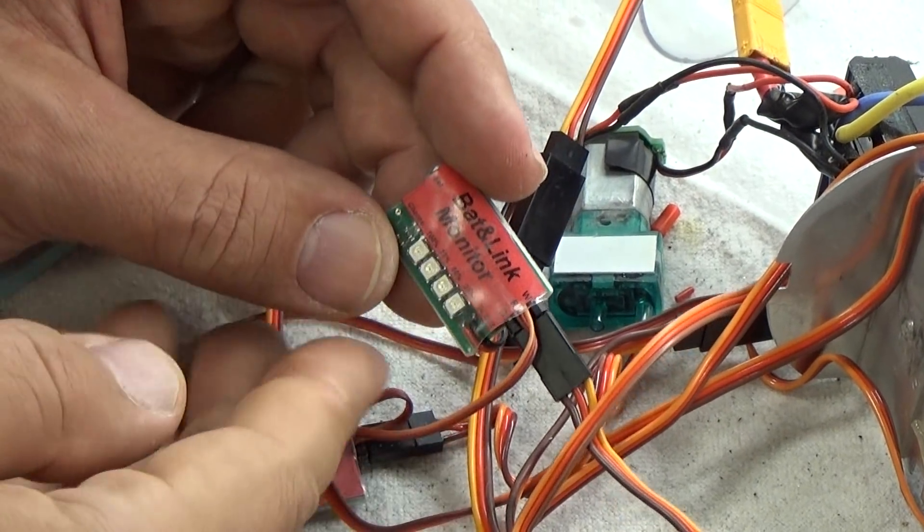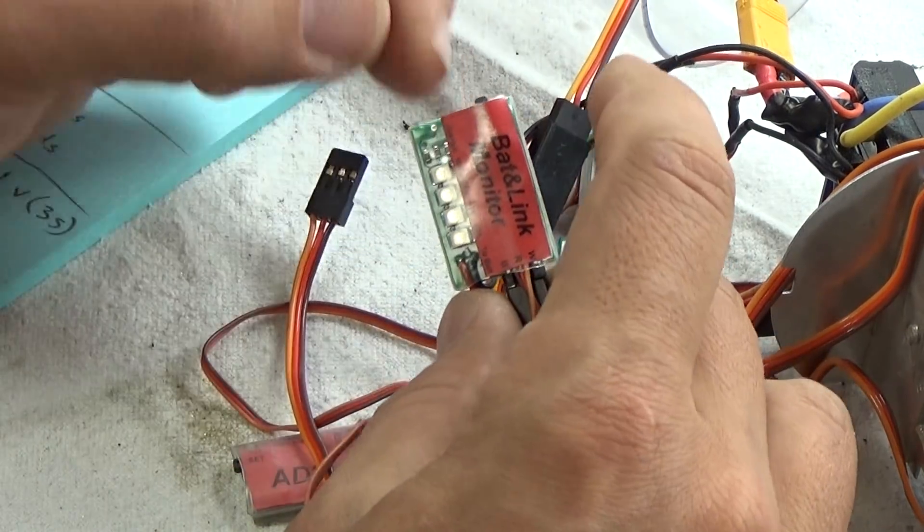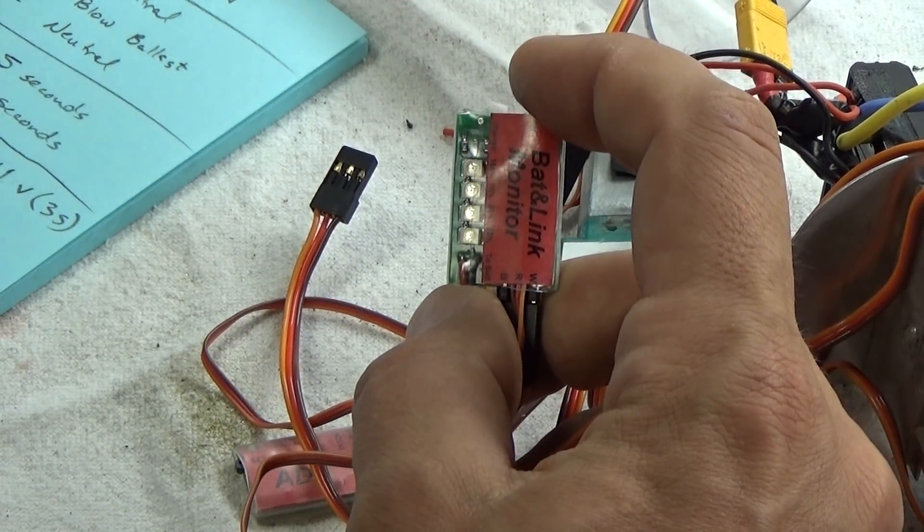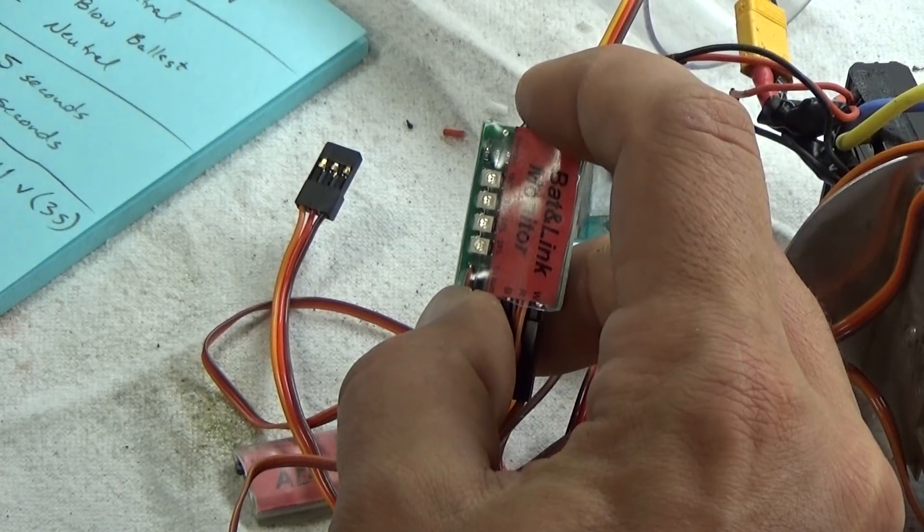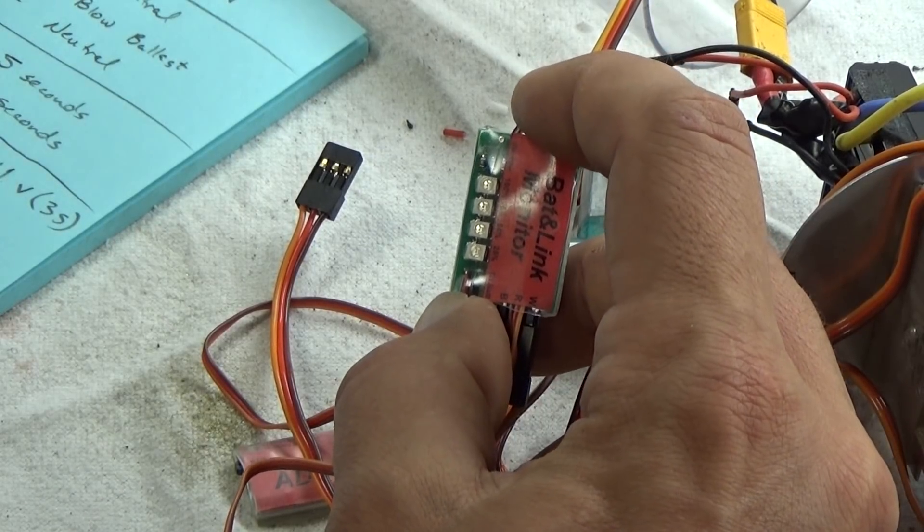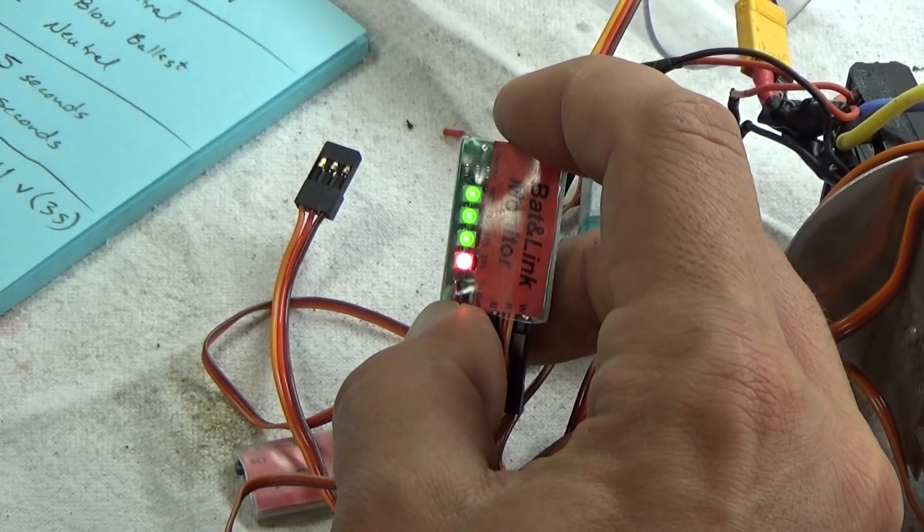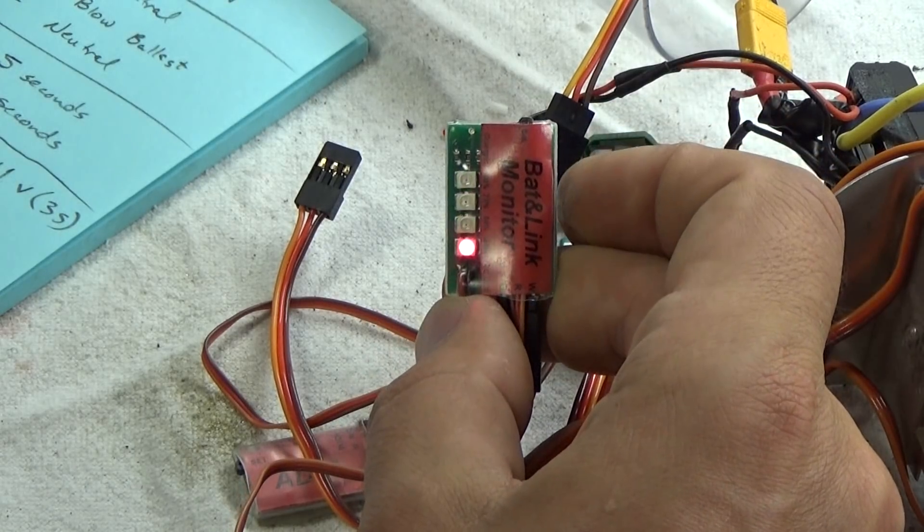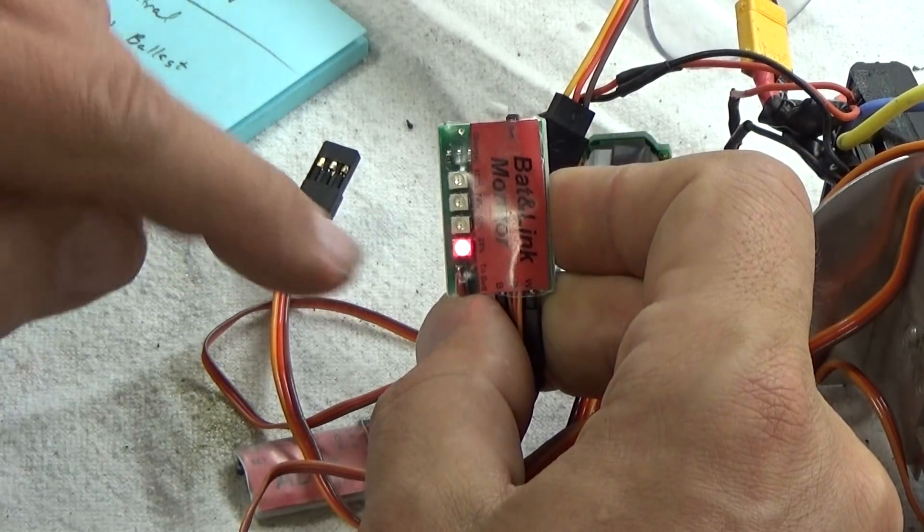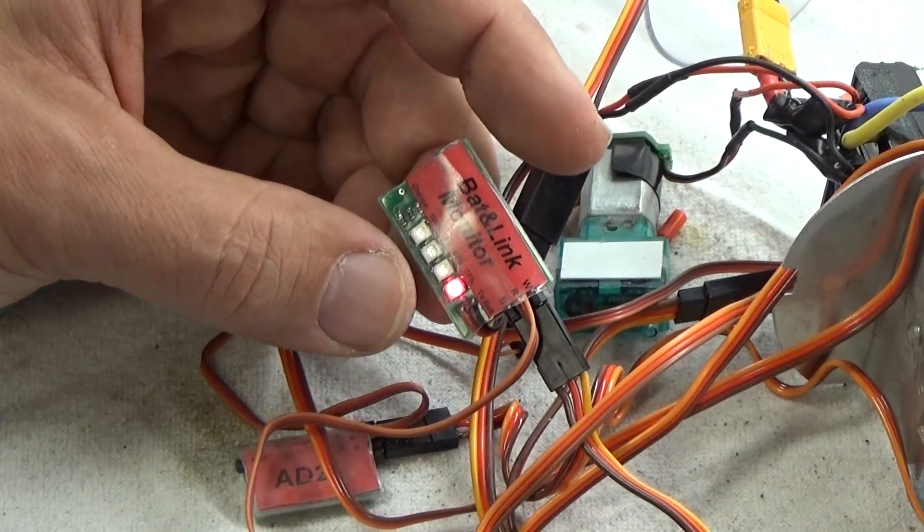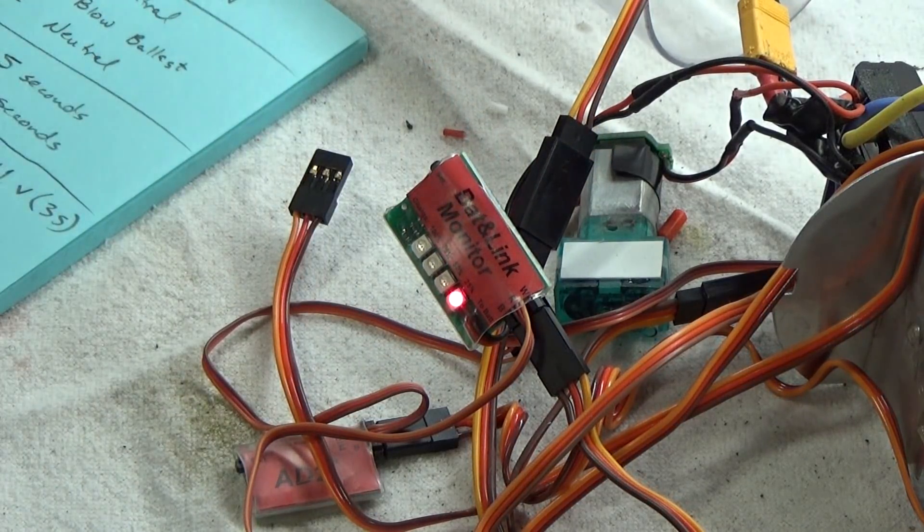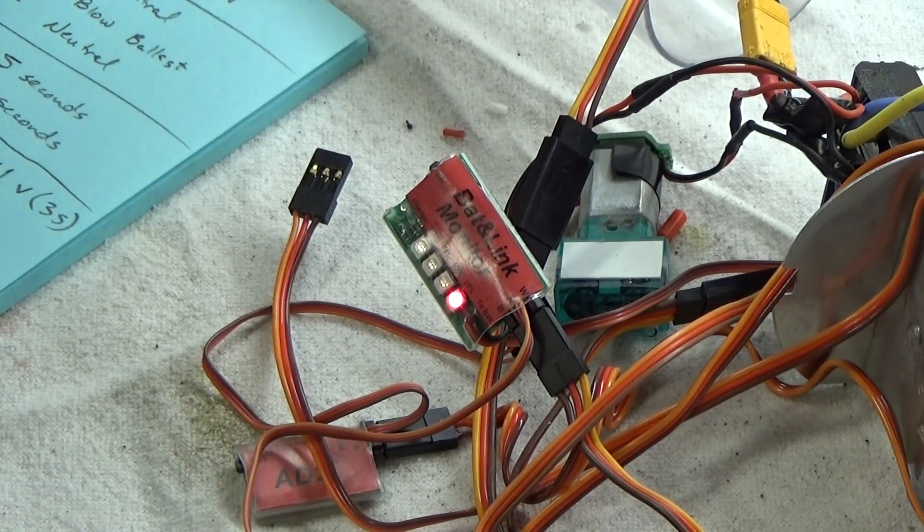All right, let's get started. I've walked you through what the connections look like. Now we're going to enter setup mode. We're going to press and hold the set button and then we're going to power on our unit. What should happen is your 25 percent LED should turn on solid red.